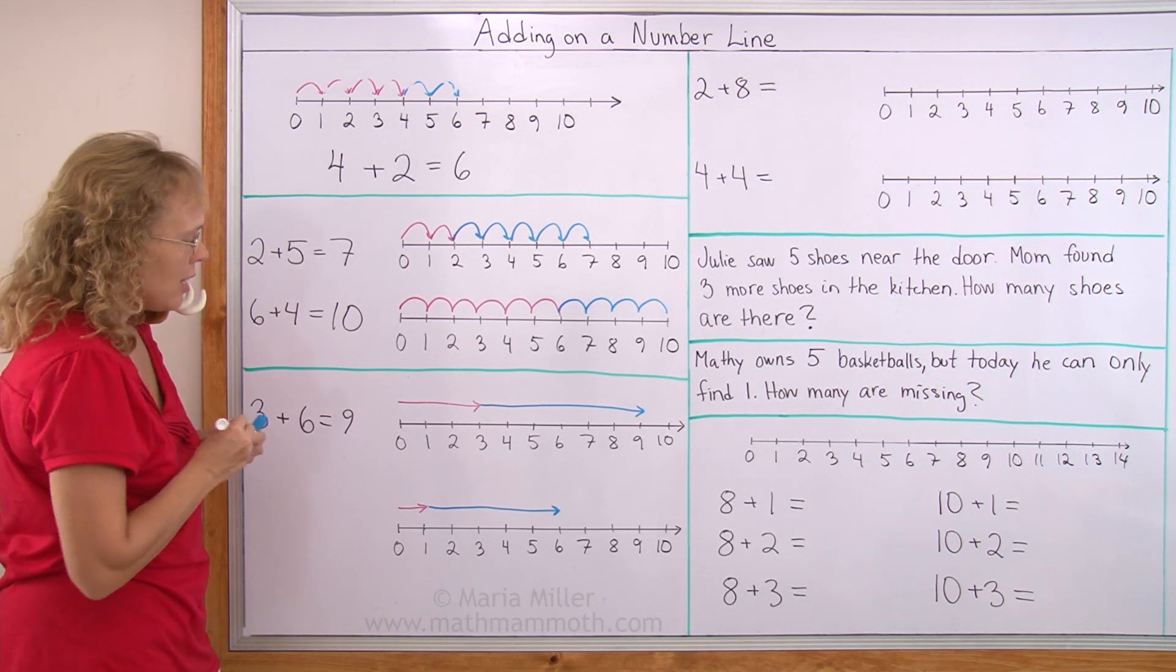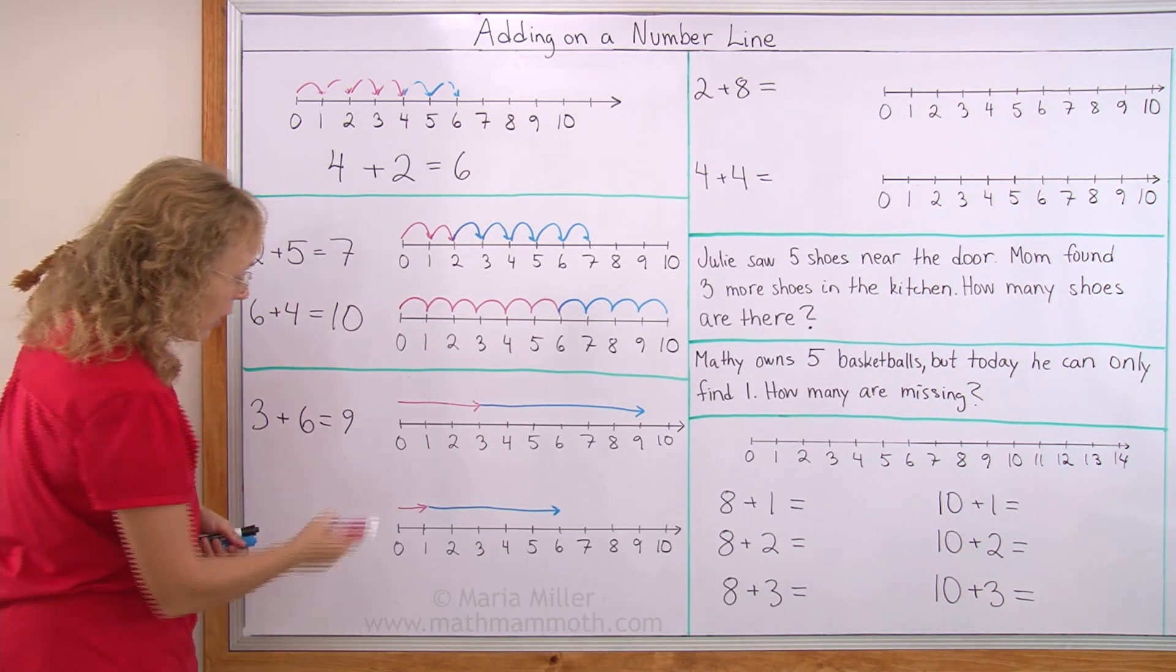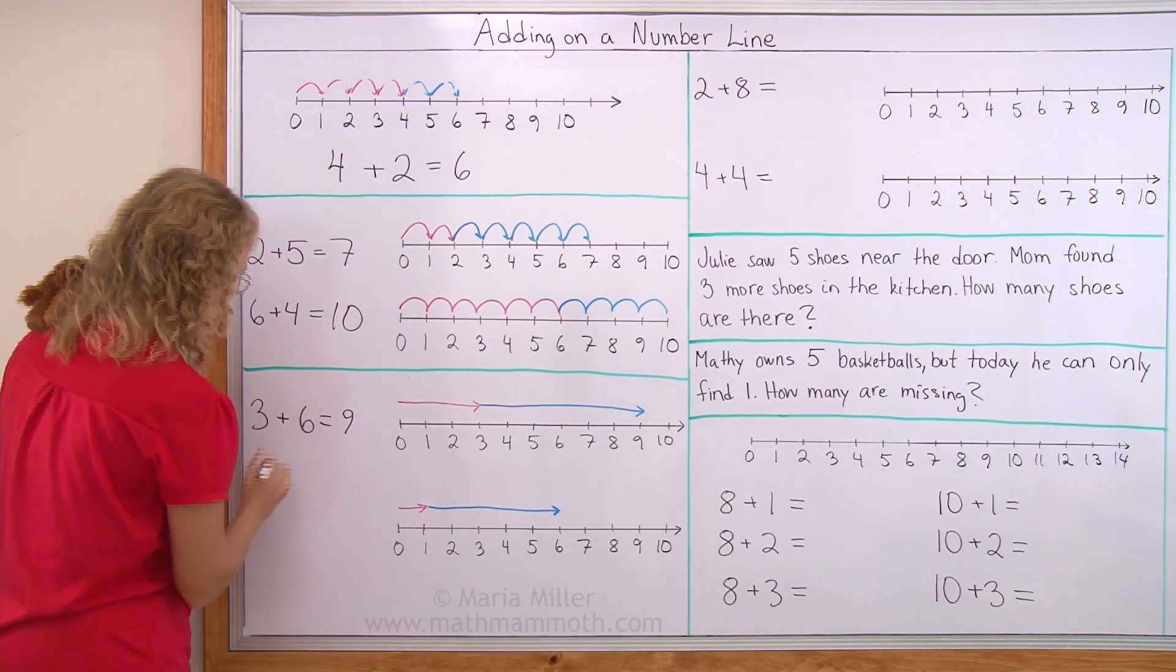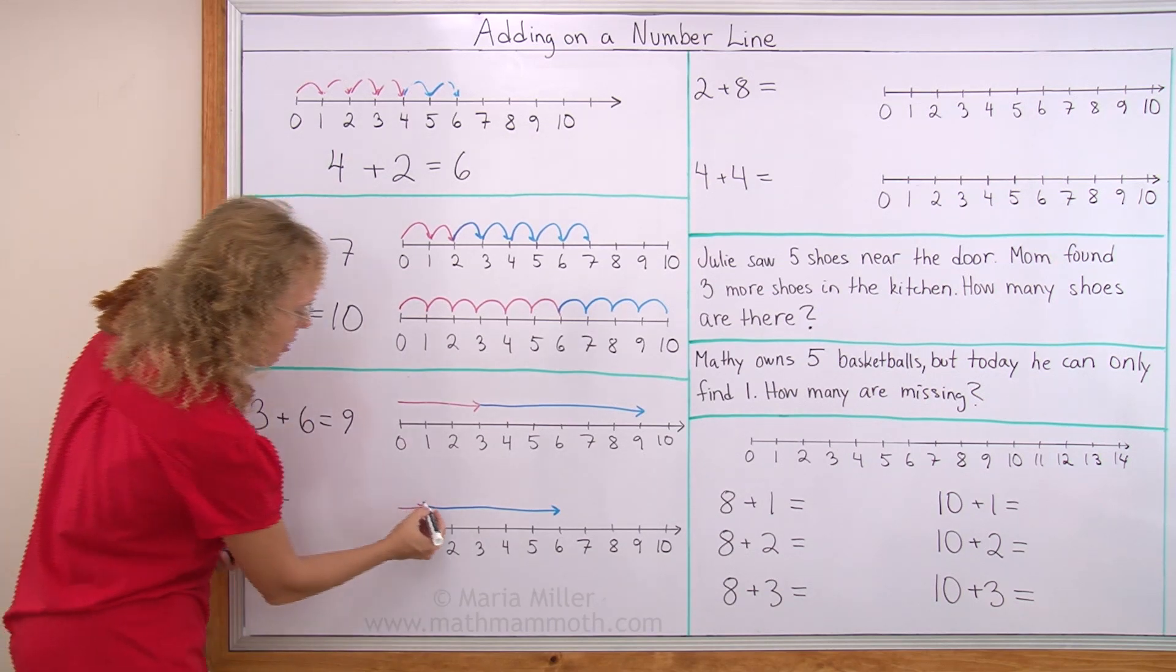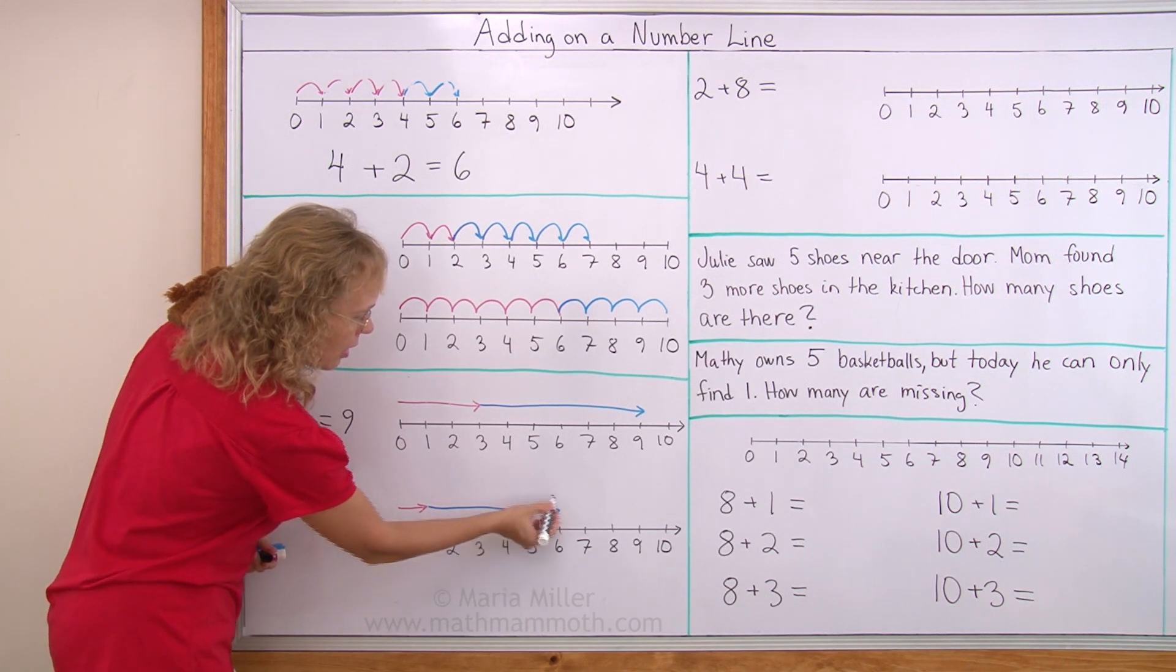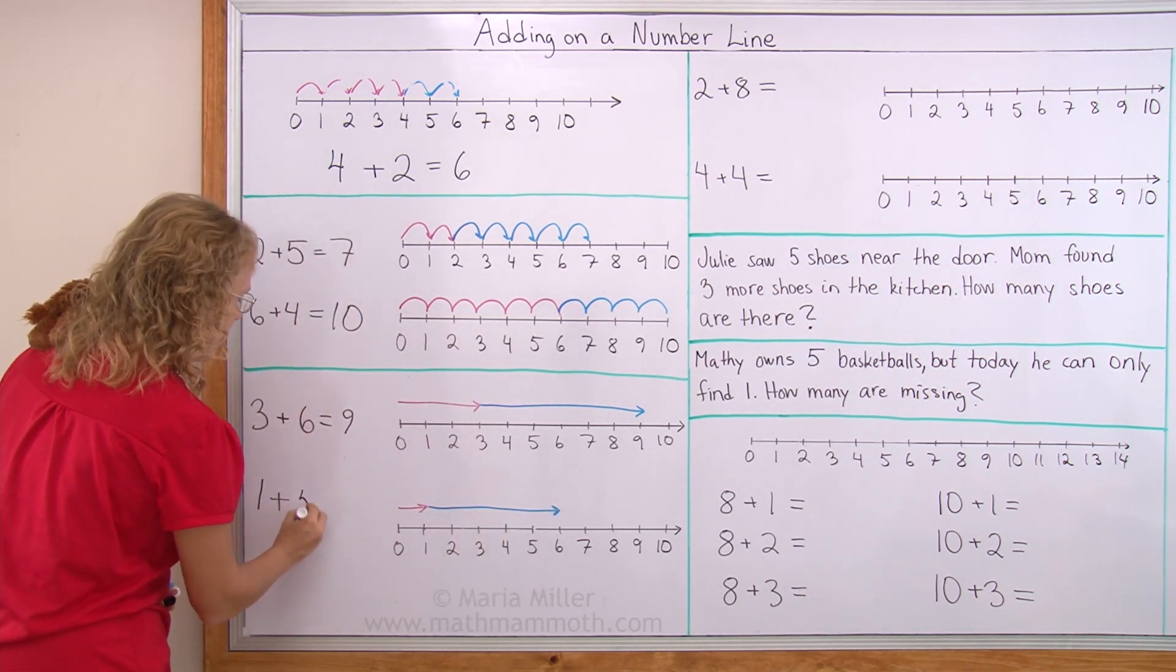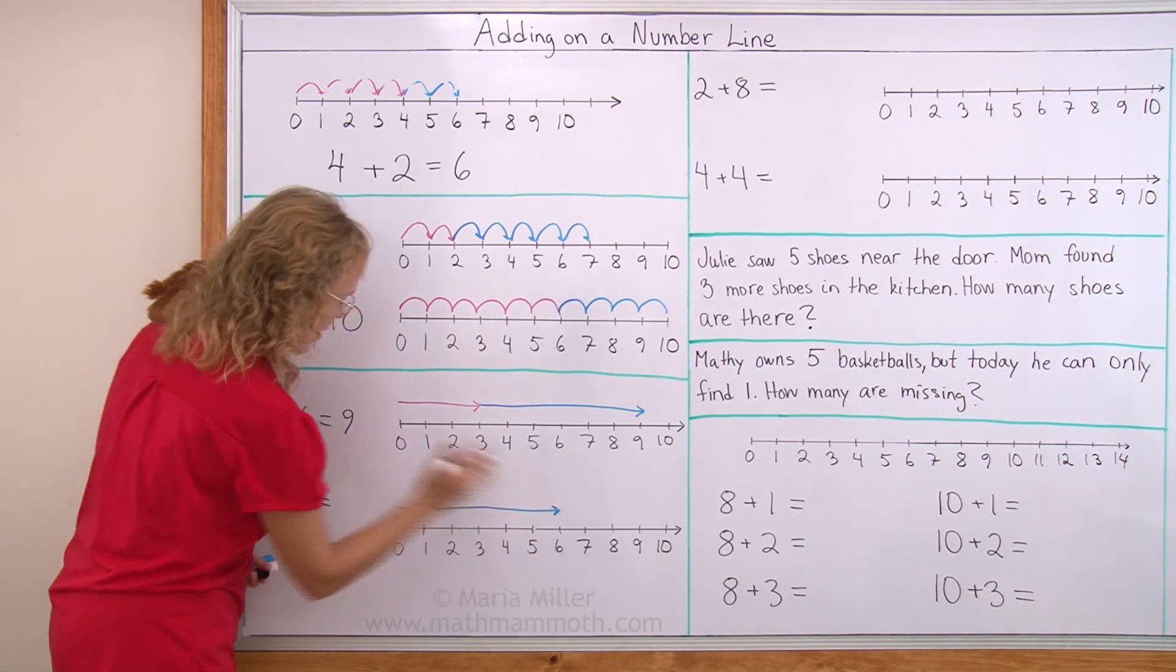Over here, first I have like a 1 jump, 1 unit. And then I have over here 1, 2, 3, 4, 5 little jumps making this one single arrow. 1 plus 5. And we end up at 6.